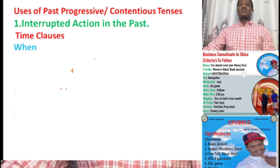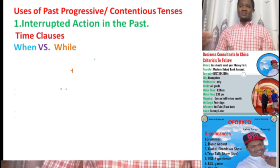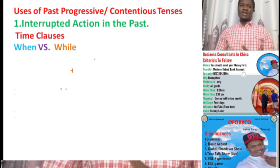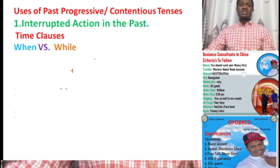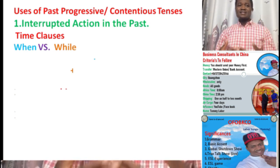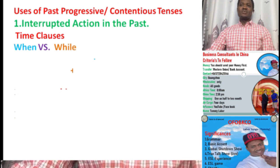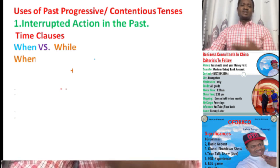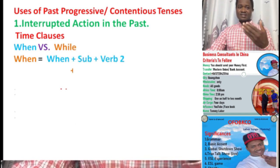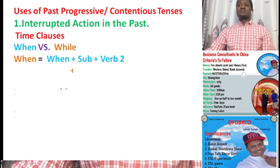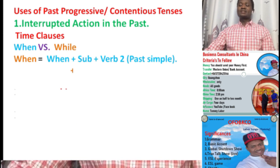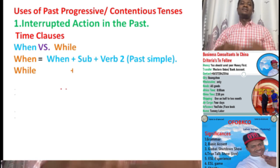We're going to deal with 'when' versus 'while.' There are a lot of words that indicate time — those are what we're calling time clauses. But something you've got to understand: the formula for 'while' is different from the formula for 'when.' For 'when,' in the formula, we mostly use 'when' with the past simple. 'While' is used with the past progressive. The formula for 'when' is: when + subject + verb in past form — that is the past simple.